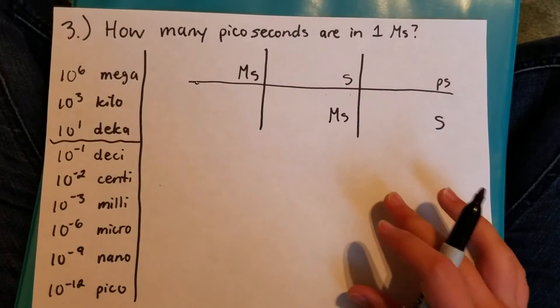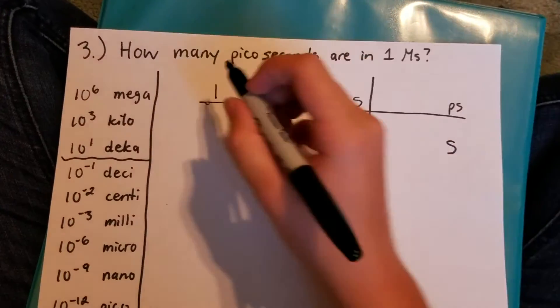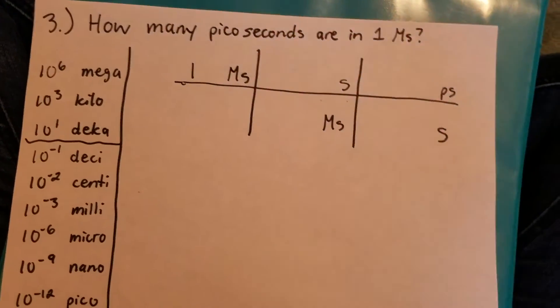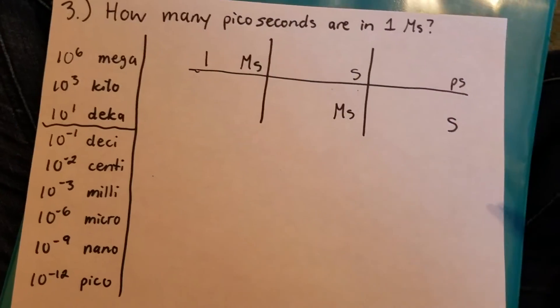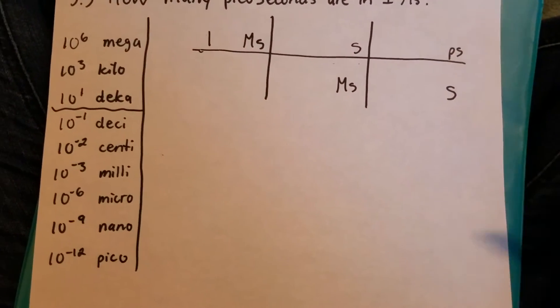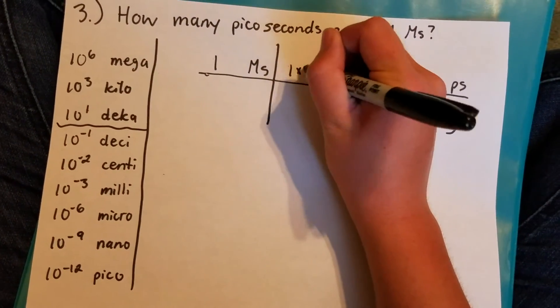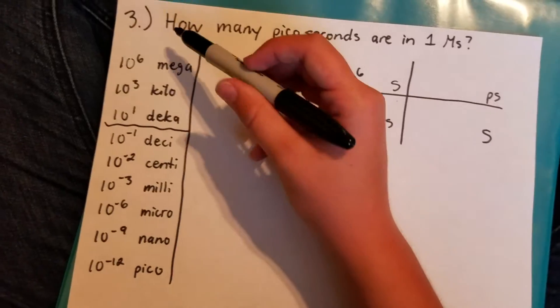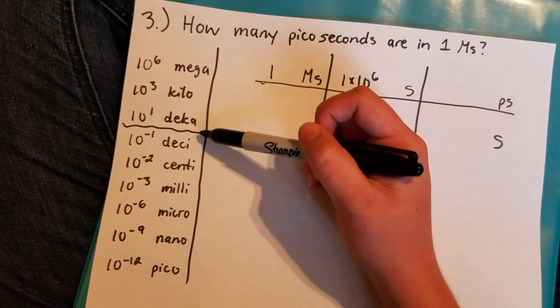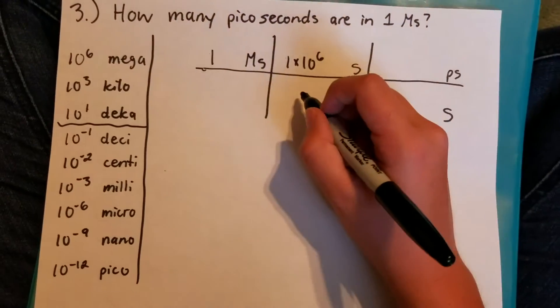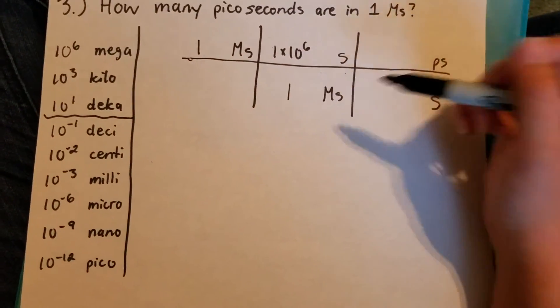Now I write in the numbers that I'm given. We were given 1 megasecond. Now you need to know how many seconds are in 1 megasecond. Now instead of moving the decimal a bunch of times out of standard notation you can keep it in standard notation by writing 1 times 10 to the 6 because you're going from 10 to the 6 for mega down to 10 to the 0 for base which is seconds. So then there's 1 times 10 to the 6 seconds in 1 megasecond.